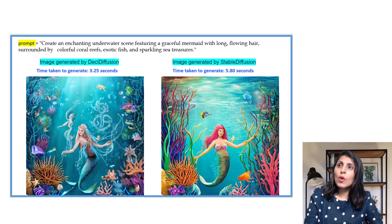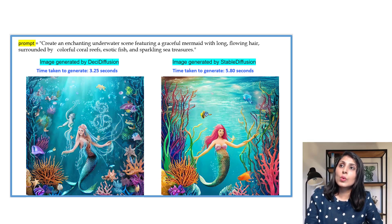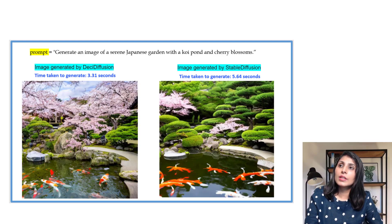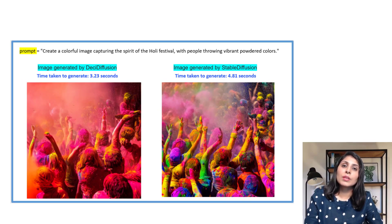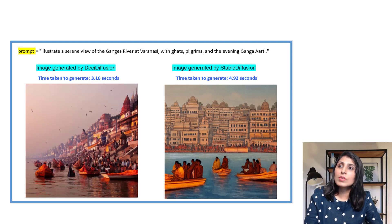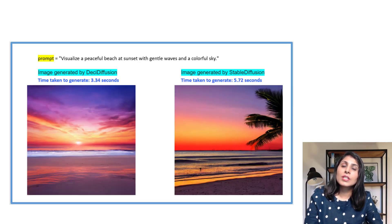For this prompt, the first image is generated by Desi Diffusion and the second by Stable Diffusion — you can see the time difference: Desi Diffusion in 3.25 seconds, Stable Diffusion in 5.80 seconds. Here is another example showing the time difference and image quality. For yet another prompt, Desi Diffusion completes in 3.34 seconds while Stable Diffusion takes 5.72 seconds. I have also shared these comparisons in my Jupyter notebook.